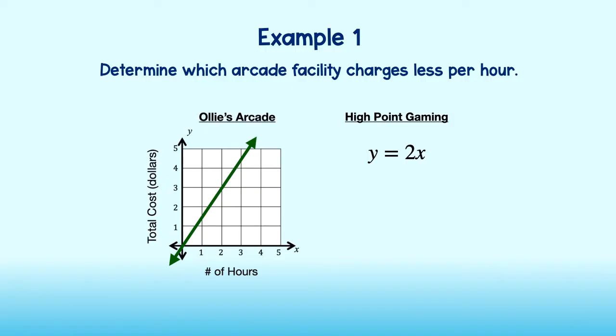First, we should note that the graph is linear, that is, a straight line, and the equation is a linear equation. Because this is so, we can confirm that the slope will tell us the unit rate. So let's take a look.